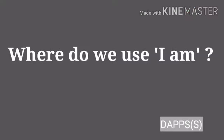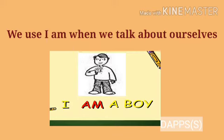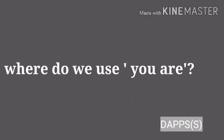Firstly, we will know about 'I am.' I am ka matlab hota hai mein. We use 'I am' when we talk about ourselves. Jab hum apne bare mein baat karte hai, to hum 'I am' ka use karte hai. For example, I am a girl, or I am a boy.